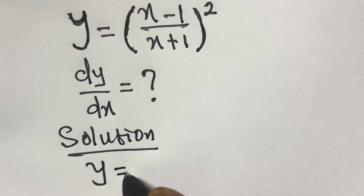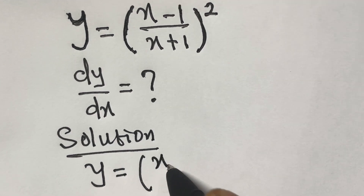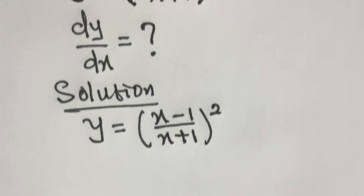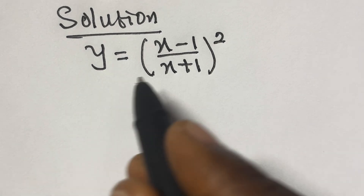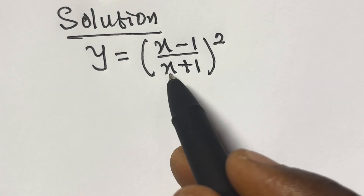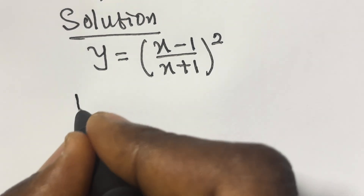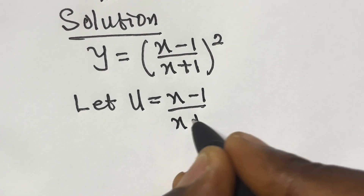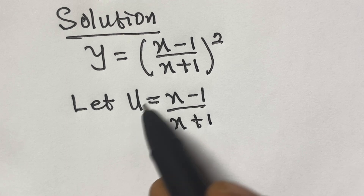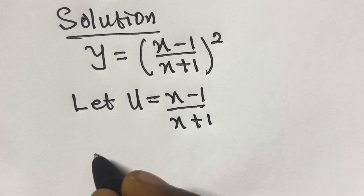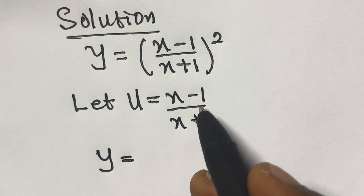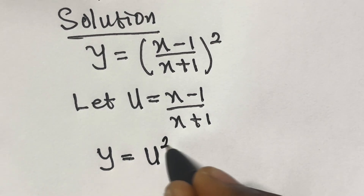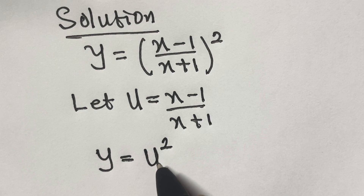We have y equals open bracket x minus 1 divided by x plus 1, squared. From here, we let u equals x minus 1 divided by x plus 1. Substituting u, since x minus 1 divided by x plus 1 equals u, we have y equals u squared.